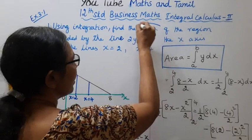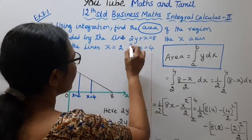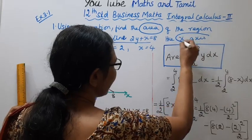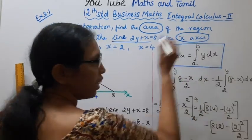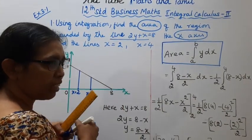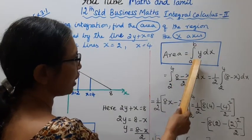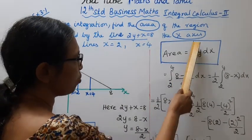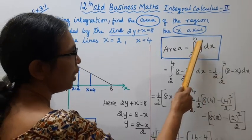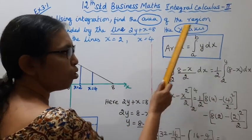Find the area. The area is equal to integration a to b of y dx. The limits are 2 to 4.